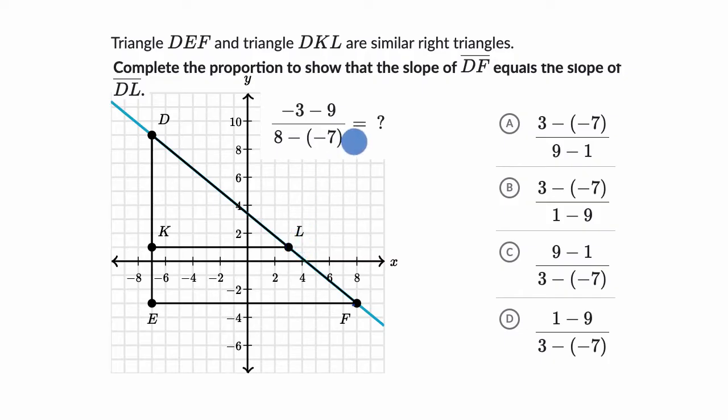Pause this video and see if you could complete it. They've started the proportion here, and so this is going to be equal to one of these choices. All right, now let's do this together. So the first thing I want to do is figure out what they're trying to calculate here. We already know that we are dealing with slope, and so this looks like a slope calculation right over here, and we know slope is change in Y over change in X, which you could view as Y1 minus Y2 over X1 minus X2.